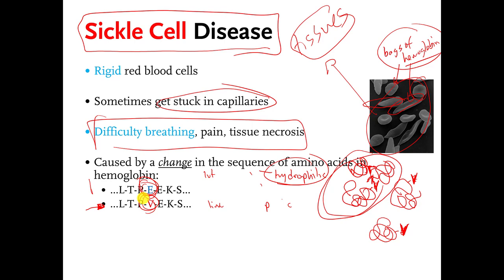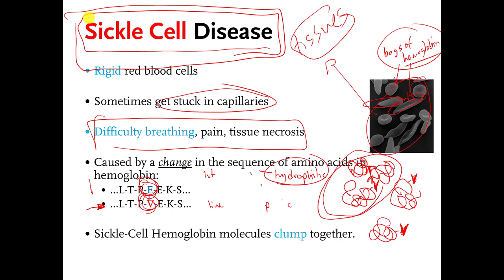That's just one example of proteins clumping together or not folding properly causing disease. There are other ones as well — muscular dystrophy is caused by protein not being made properly and not folding up, and cystic fibrosis as well. There are many diseases like this. I believe that sickle cell disease was the first disease that was understood at this level of detail. Prior to that, in the 1920s, you might have sickle cell disease or cystic fibrosis — what's wrong with you? We don't know. Sickle cell disease was the first disease where people were actually able to find a specific molecule that was messed up and appeared to cause the disease. After that, they also figured out specific molecules involved in cystic fibrosis and muscular dystrophy.